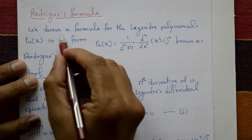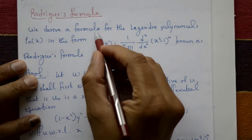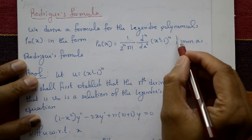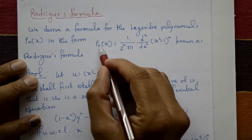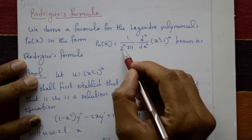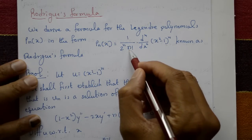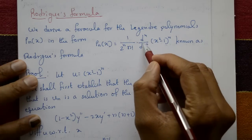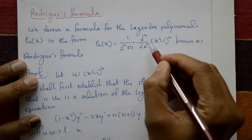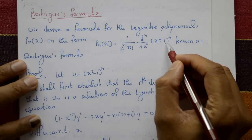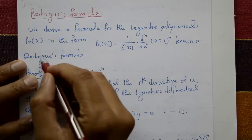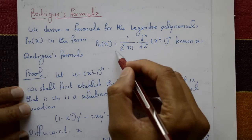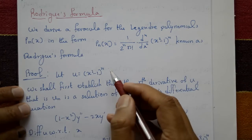Rodrigues' formula: we derive a formula, so we have to prove that P_n(x) is equal to 1 upon 2^n · n! into d^n upon dx^n into (x² - 1)^n. This is known as Rodrigues' formula, and we have to prove this one.